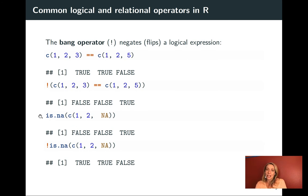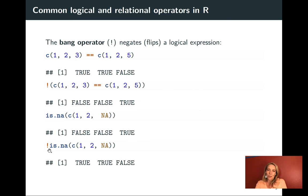The bang operator is particularly helpful when looking for missing values and filtering out rows that have missing values for a certain column. There's a special logical operation is.na that takes a vector and checks for each position if it is a missing value. On a vector with 1, 2, and then a missing value, it evaluates to false, false, true. If we put a bang operator in front of it, now it's true anywhere we're not missing a value and false where we are — so putting it in a filter function easily filters out places with missing data.